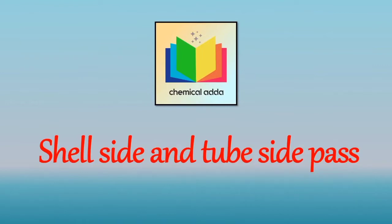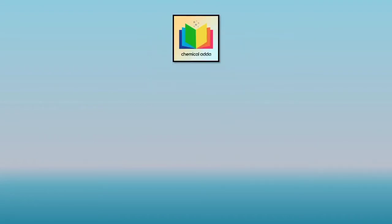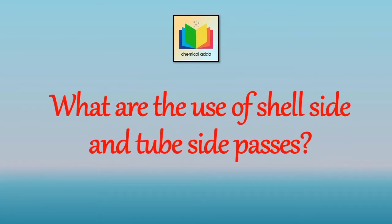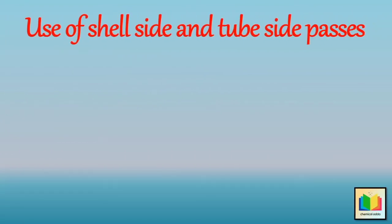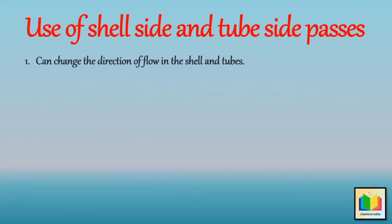And 2-4 shell and tube heat exchanger. So let's see what are the uses of shell side and tube side passes. In the shell side or tube side of the shell and tube heat exchanger, with the help of passes we can change the direction of flow in the shell and tubes. The pass is also called as partition.